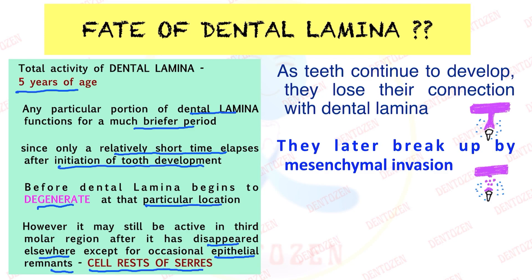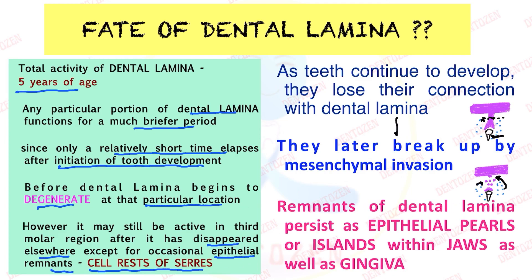As these teeth develop, they lose their connection with the dental lamina, because ectomesenchymal cells will invade and break the connection. The remnants of dental lamina found in the jaws as well as the gingiva are known as epithelial pearls or islands, and they are also known as cell rests of Serres — another important viva question.